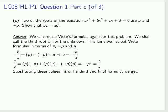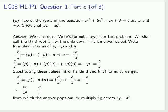We can substitute these values into the third and final formula. We're left with minus d over a equal to p by minus p by u. We can plug in our values there. We get minus bc over a² equals minus d over a, from which the answer pops out by multiplying across by a². And that is the end of question 1.